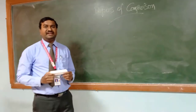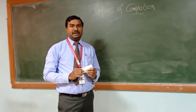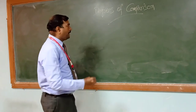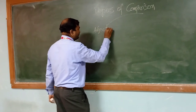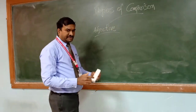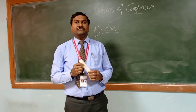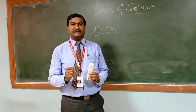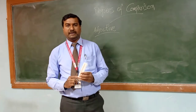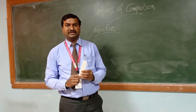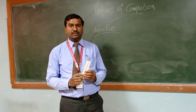Degrees — it is the level or extent of something. This is the part which covers about adjectives. An adjective is a word among the eight parts of speech which describes the quality, quantity, or number of a noun or pronoun in a sentence. An adjective is a word which defines or modifies a noun or pronoun in a sentence.